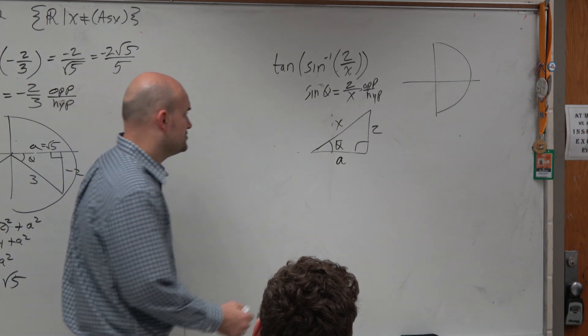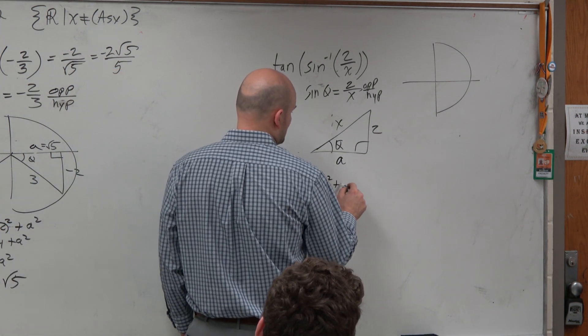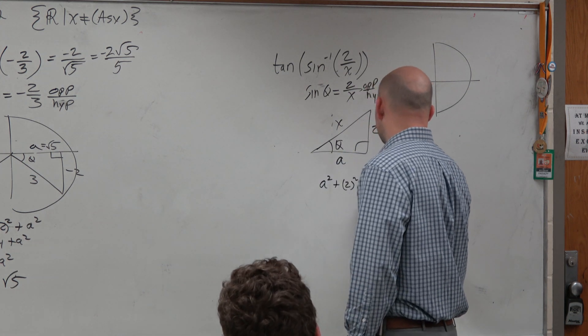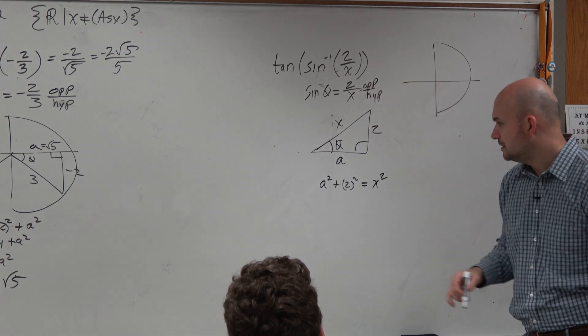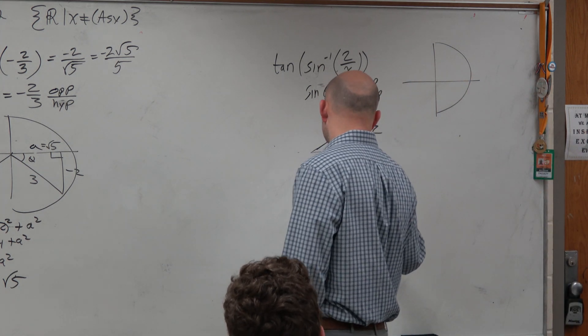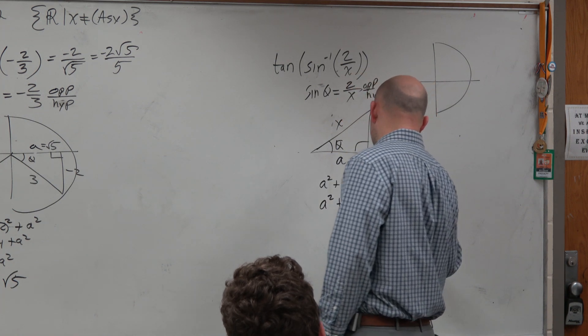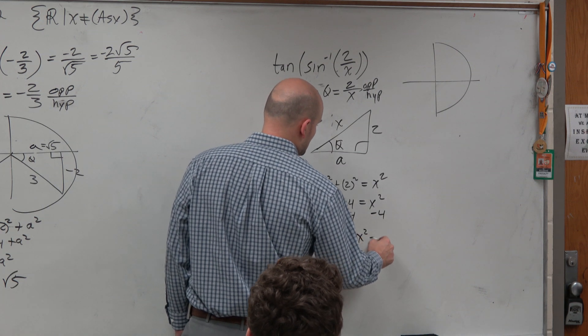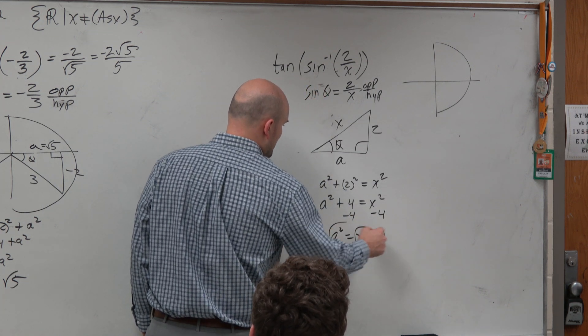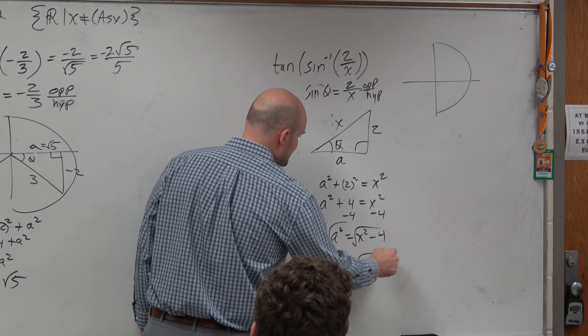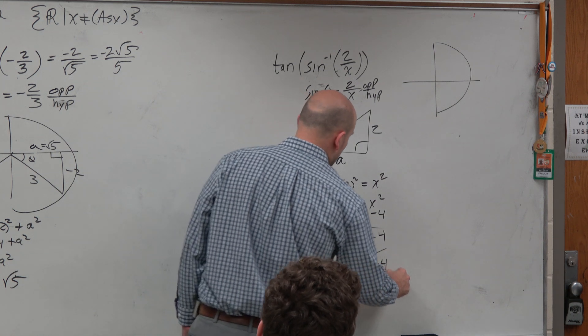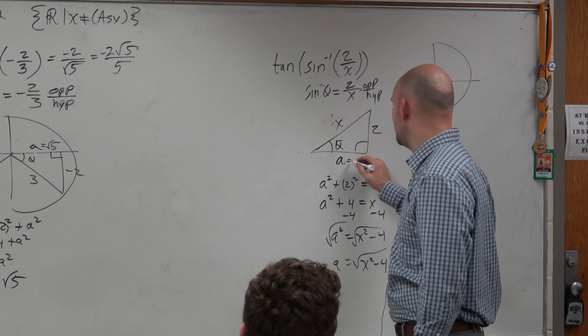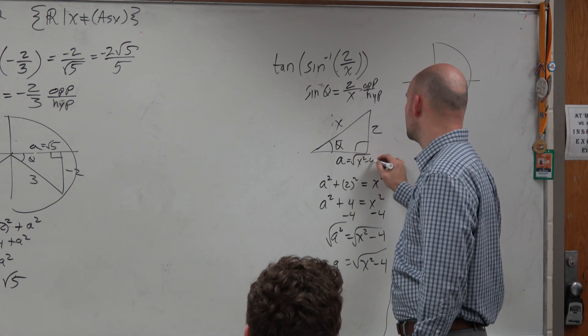So let's go ahead and use Pythagorean theorem again. a squared plus 2 squared is equal to x squared. And I get a squared plus 4 equals x squared. Subtract 4, a squared equals x squared minus 4. Square root, square root. I know, again, it has to be positive. So it's x squared minus 4.